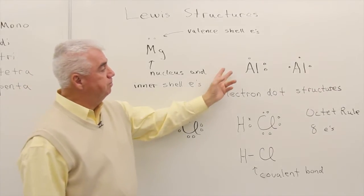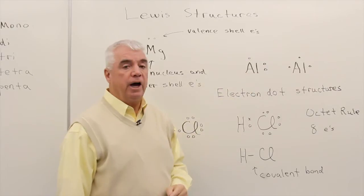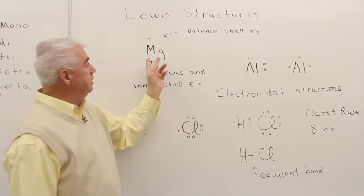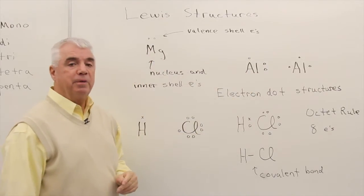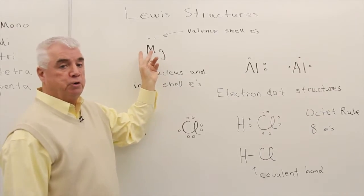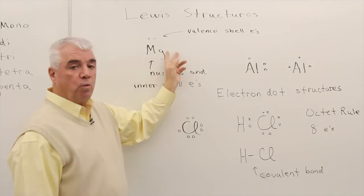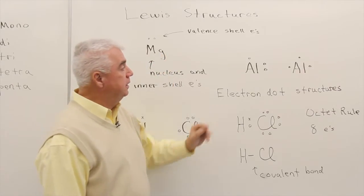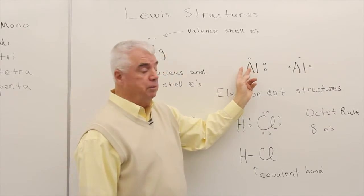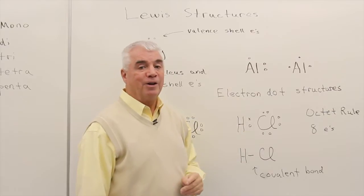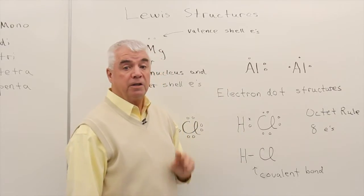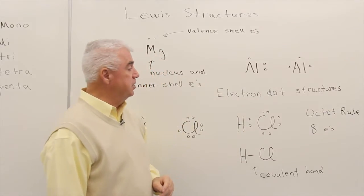Aluminum is in group 3a, so it would have three dots. And I didn't mention this with magnesium, but it doesn't matter where you show those two dots. Could be up there, they could be below the symbol, one on the left, one on the right. And the same thing is true of aluminum. It doesn't really matter where you show those three dots. It's the number of dots that's important.